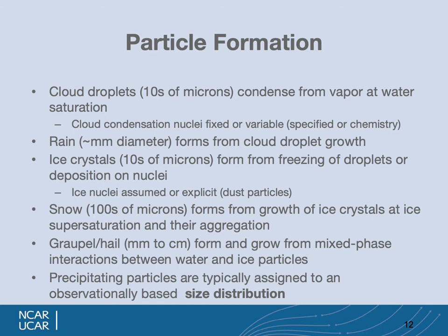Snow is hundreds of microns in size and forms from the growth of crystals at ice supersaturation and their aggregation. Graupel and hail are millimeters to centimeters in size and form and grow from mixed-phase interactions between water and ice particles — snow and cloud water, for example, can merge to form graupel. Denser versions of graupel with more riming and more water yield denser particles, which can be treated as hail.